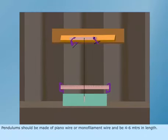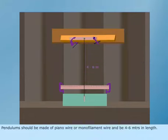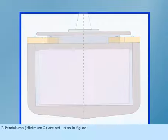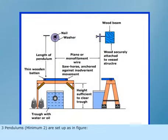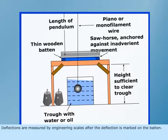Pendulums should be made of piano wire or monofilament wire and be 4 to 6 meters in length. Pendulum length is accurately measured and recorded. Three pendulums or minimum two are set up as in figure. A trough filled with water is provided to dampen oscillations. Deflections are measured by engineering scales after the deflection is marked on the batten.